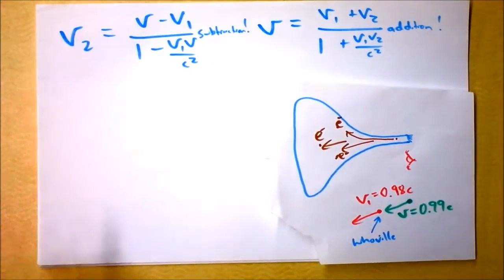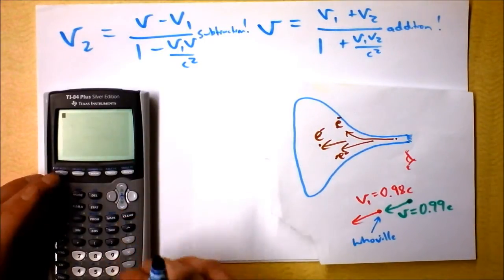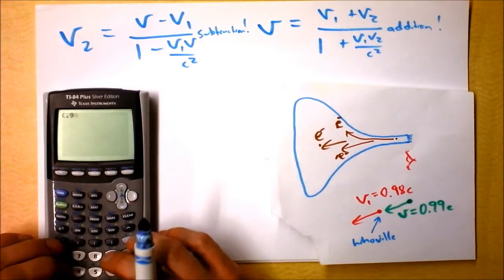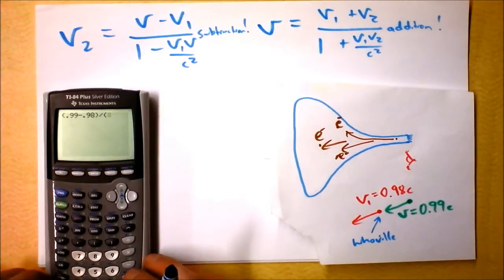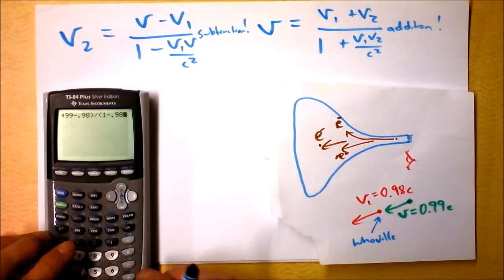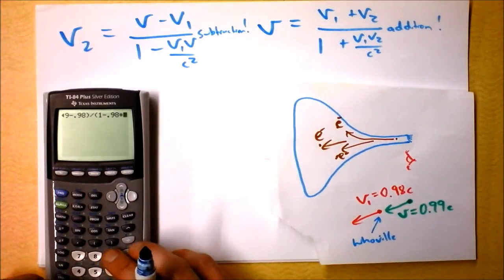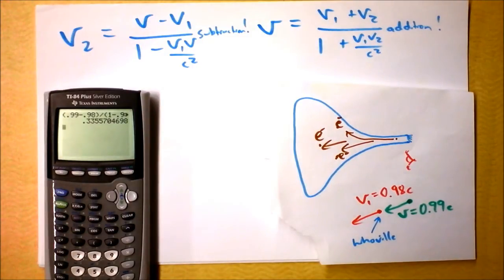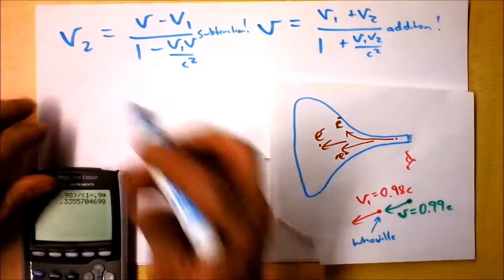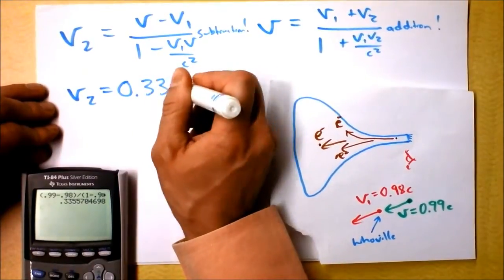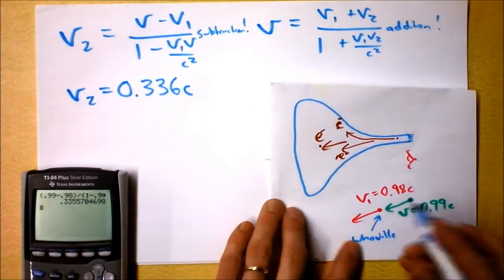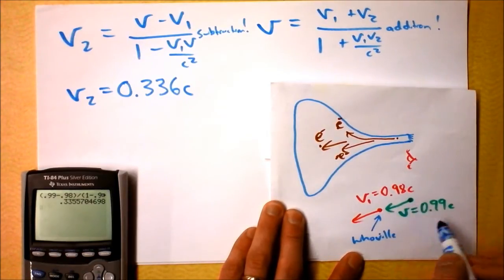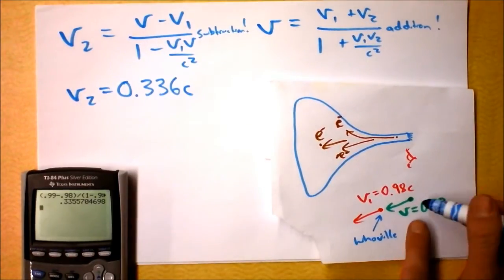I turn on my calculator. I take (0.99 minus 0.98) divided by (1 minus 0.98 times 0.99) — I don't need C because I'm using betas. I get 33.6% the speed of light. V2 for our problem is 0.336 times the speed of light. So Whoville says this electron is approaching at 33.6% the speed of light, whereas a stationary observer might just subtract them and say that's only a 1% difference. Whoville knows better — you better get out of the way of that electron.